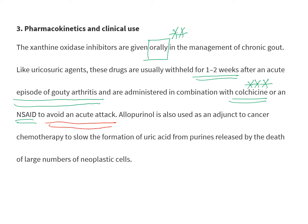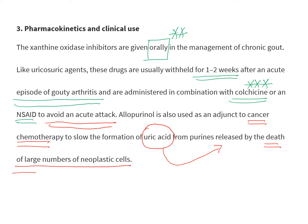Allopurinol is also used as an adjunct to cancer chemotherapy, because in cancer there is increased uric acid formation as a result of purines released due to the death of large numbers of neoplastic cells. Therefore, you can also prescribe allopurinol — or preferably febuxostat — if there is gouty arthritis or such complications in cancer patients.